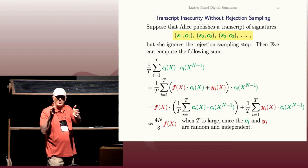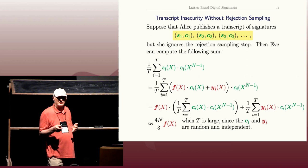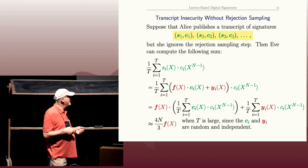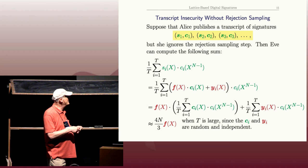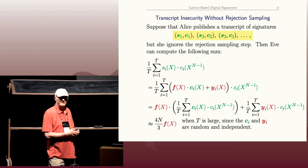And their coefficients of the Y's and the C's were sort of uniform or were symmetric around zero. Okay, so when you take these products, on average as T gets big, this is actually going to get quite small.